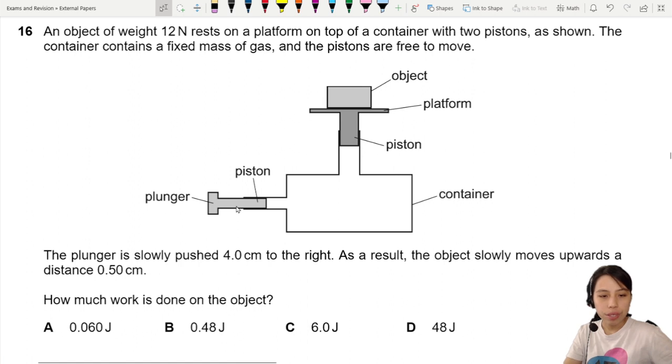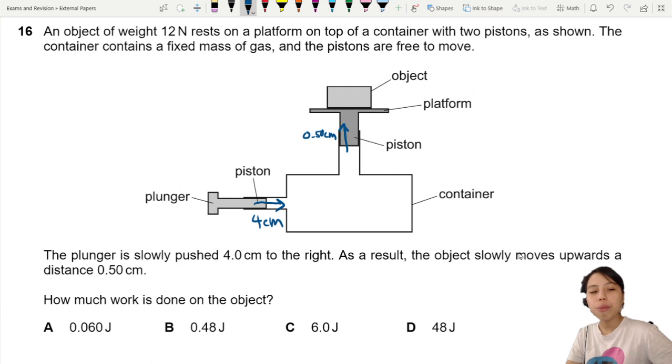It's going to push this in 4 cm. As a result, this object will slowly move upwards by a distance of 0.5 cm. How much work is done on the object?